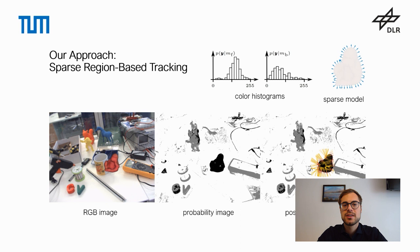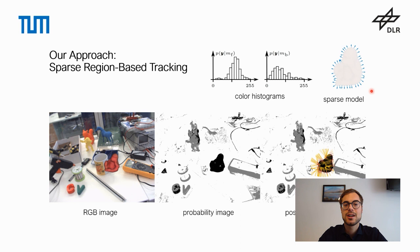That's why we would like to propose a highly efficient sparse approach to region-based tracking. To avoid the rendering step, we use a sparse model that consists of contour points and normal vectors that are pre-computed for multiple views all around the object. Also, we provide a probabilistic formulation that considers image information sparsely along so-called correspondence lines. An example of correspondence lines is shown in the image on the right as orange lines. Since the contour of an object is locally very similar, we typically do not lose information by significantly improving efficiency.